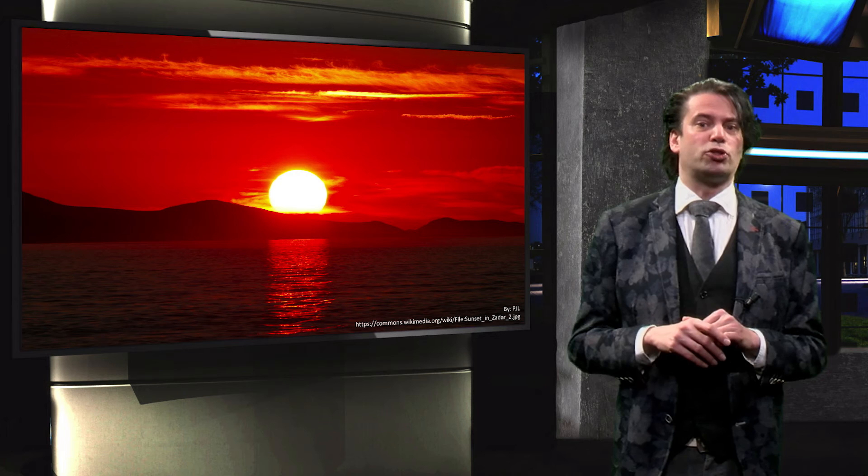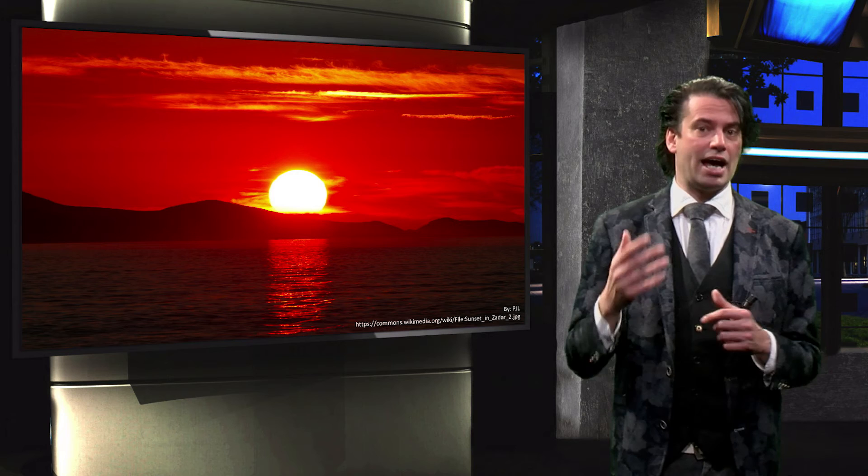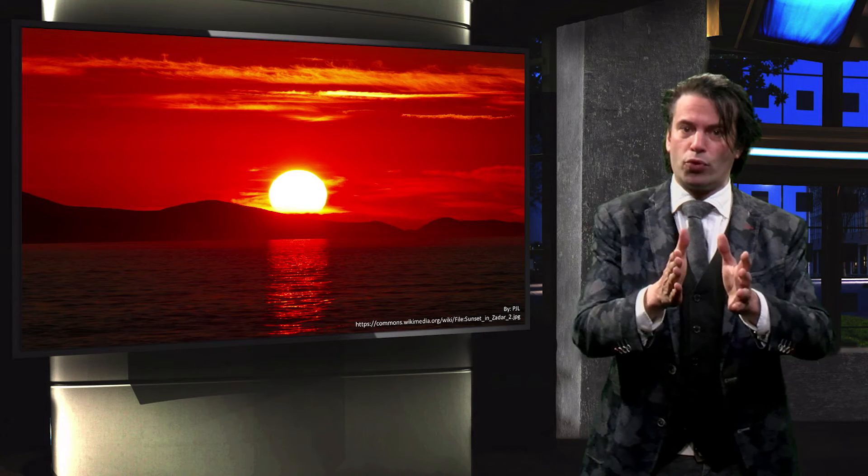Red light also undergoes an increased number of scattering events at sunset. For Mie scattering, the angular distribution is mainly pointed in the forward direction. Mie scattering therefore does not cause red light to be fully diffused.